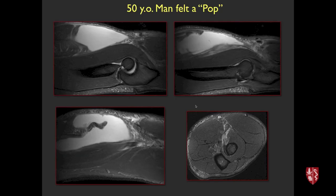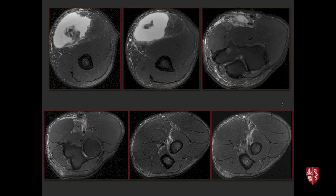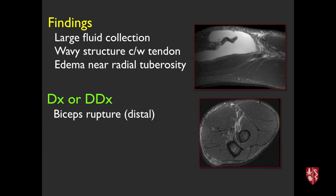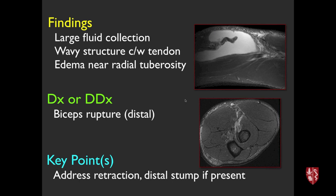50-year-old man who felt a pop in the arm. MRI shows a huge fluid collection and the biceps tendon is disrupted at the distal radius — this is a rupture of the distal biceps tendon, likely torn off the bone. When evaluating, address the degree of retraction and whether it's a complete or incomplete tear with a stump if present.